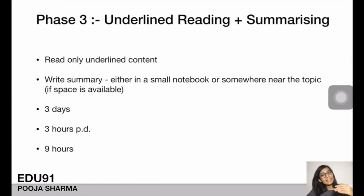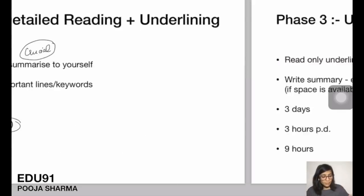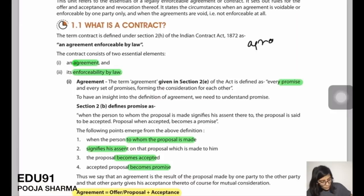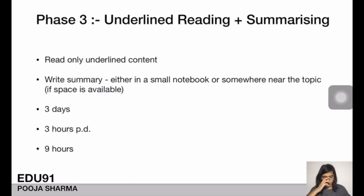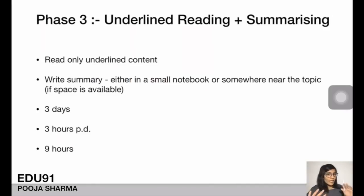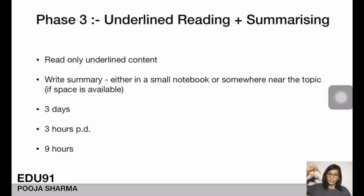In Phase 3, you read the already underlined content and try to write a summary or brief explanation. Read the keywords, identify the topic, then write a summary. You can write the summary in the book margins or in a dedicated summary notebook. You can even write in Hindi — whatever is most suitable for you. The key is to capture the main concept in your own words. Invest about 3 days at 3 hours per day — approximately 9 hours for Phase 3.